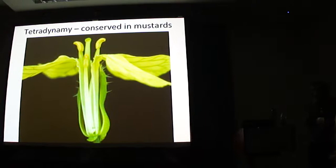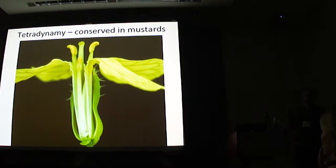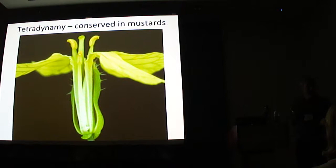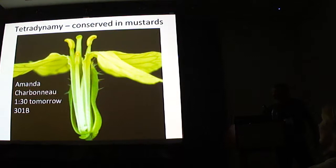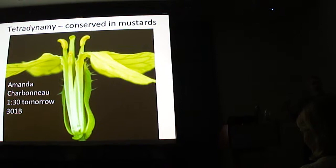The family is not only very large, it's also important. It includes Brassica and radish crops, Arabidopsis, invasive species like garlic mustard, and wild radish, which is one of the world's worst weeds. If you're interested in weed adaptations in wild radish, my student Amanda is going to give a talk tomorrow at 1:30.